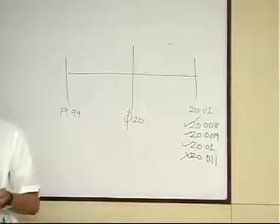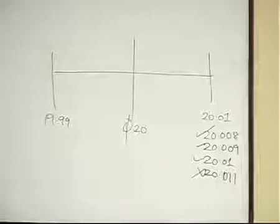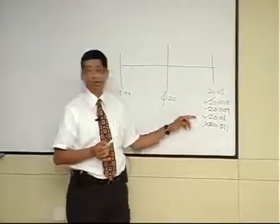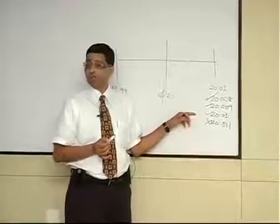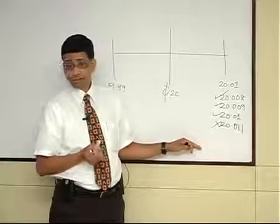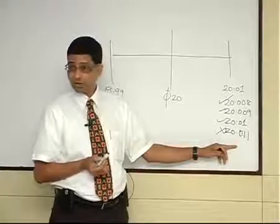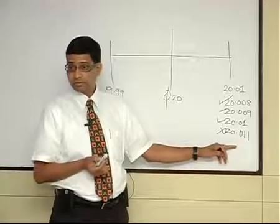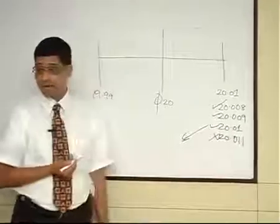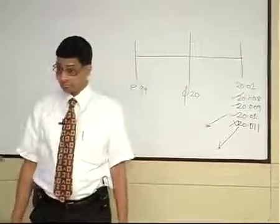And as you all know, every measurement there will be error. There is error in every measurement. You agree that? So what you have measured as 20.01 could be more than 20.01 also. So what have you done here is you have probably accepted a rejected part and you have rejected a good part. Possible? Possible.